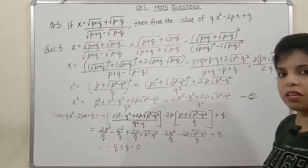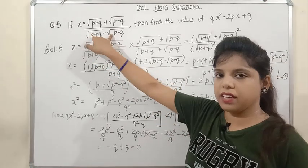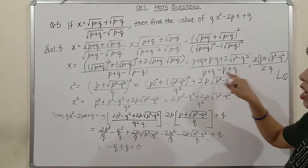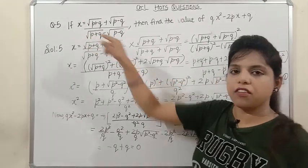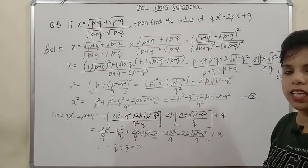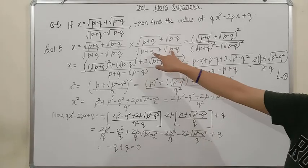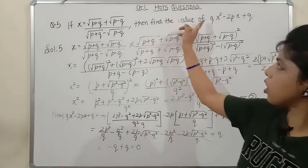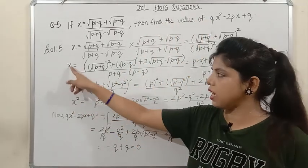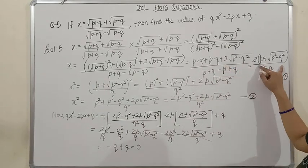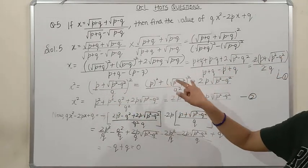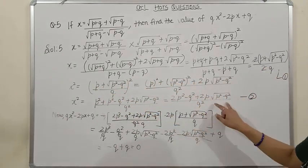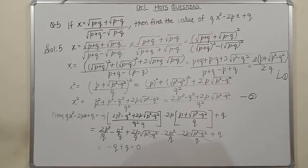So the final answer is 0. The key steps were: rationalize x to remove the irrational denominator, then square x to find x², apply the (a+b)² identity, substitute into the expression, and observe all terms cancel. Please note it down.